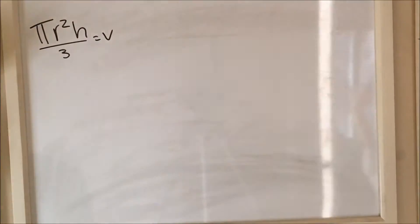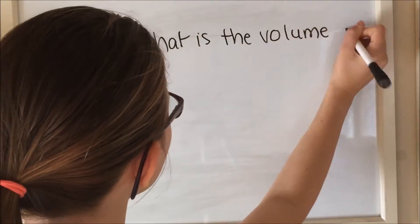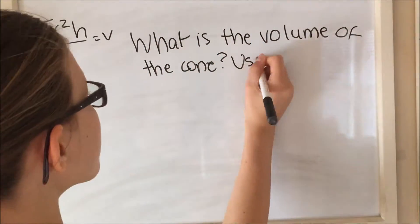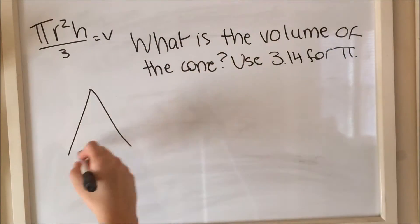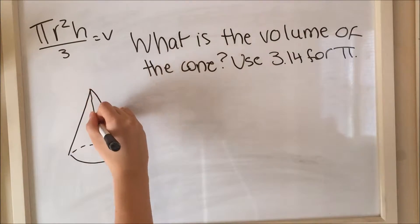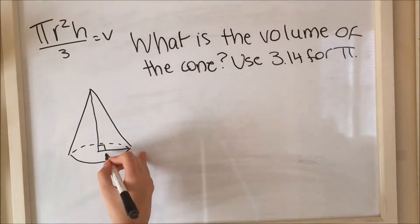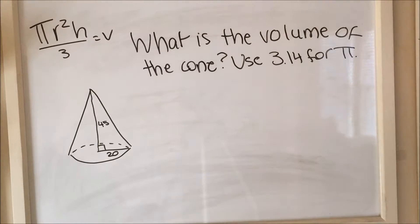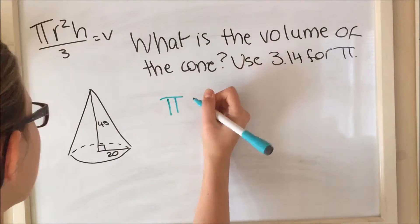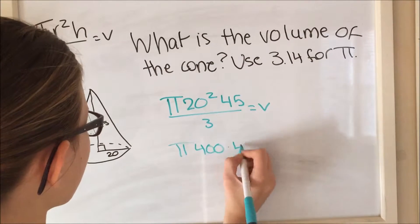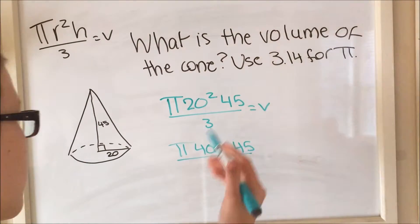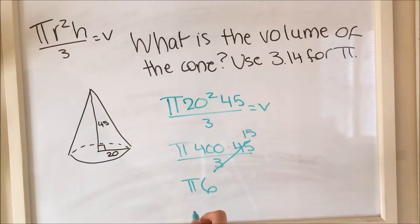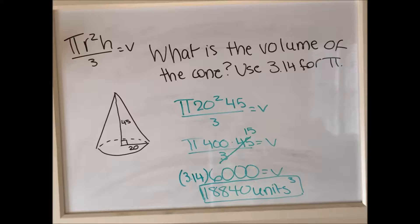Here is an example of how to find the volume of a cone. Use 3.14 for π — sometimes it will say use 22/7 for π, so pay attention to that. The radius of this cone is 20 and the height is 45. You just plug in the numbers: π times 20 squared times the height divided by 3. The answer is 18,840 units cubed.